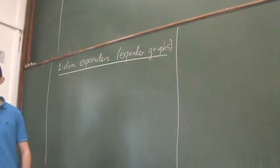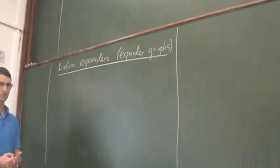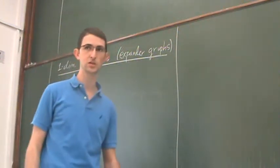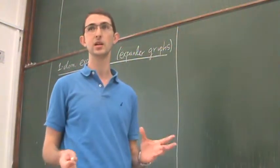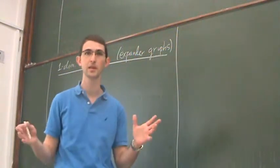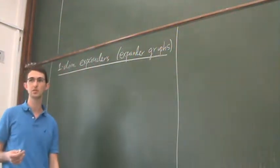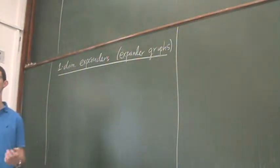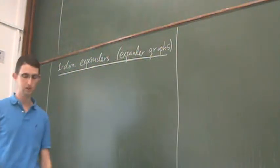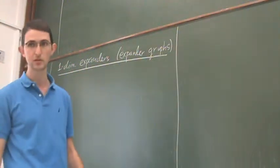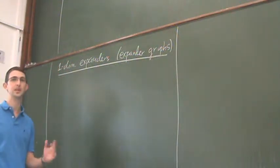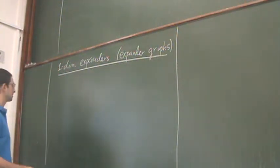Today's goal is to do two things. The first is to give two definitions of expander graphs - a definition using the Cheeger constant, then prove that this is equivalent to a spectral definition. Then I will show what is the optimal spectrum you could expect from an infinite family of graphs, meaning what is an optimal expander.